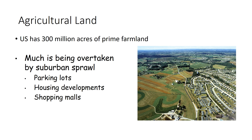In the U.S. we have 300 million acres of what we call prime farmland. This is farmland that has really high quality soil and is not likely to be eroded in terms of topography, as long as we're managing the soil properly, like we learned back in Chapter 15. That's about one acre per U.S. citizen of prime farmland.